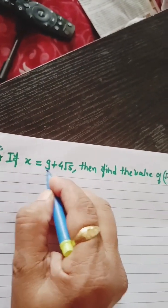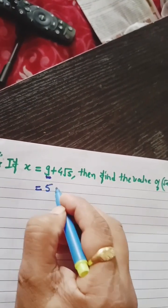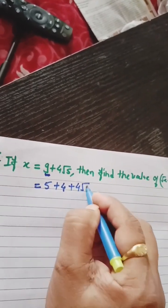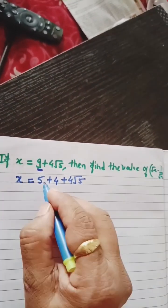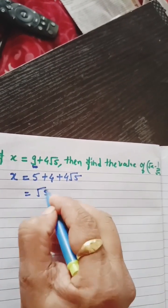This 9 we will split as 5 plus 4, plus 4 root 5. This is our x. Now, this is the perfect square of root 5 plus 2.